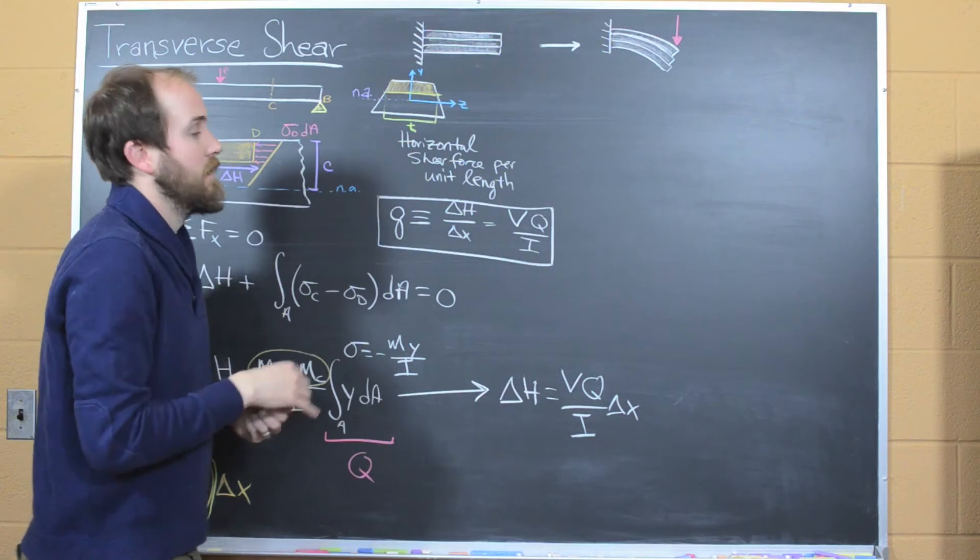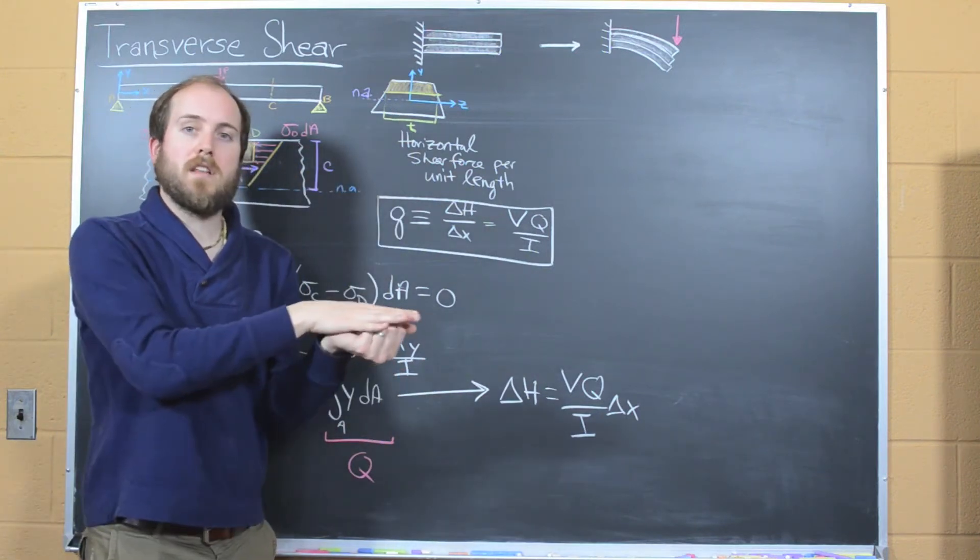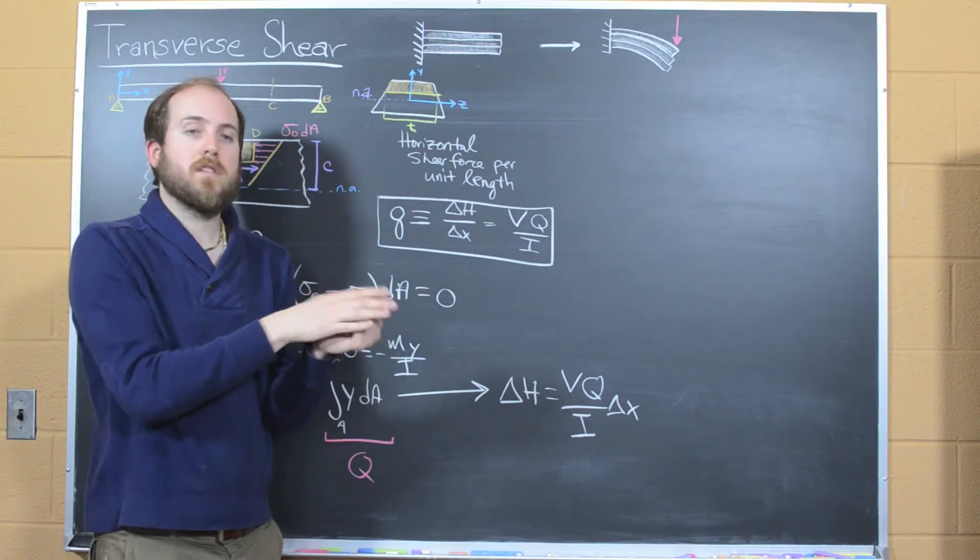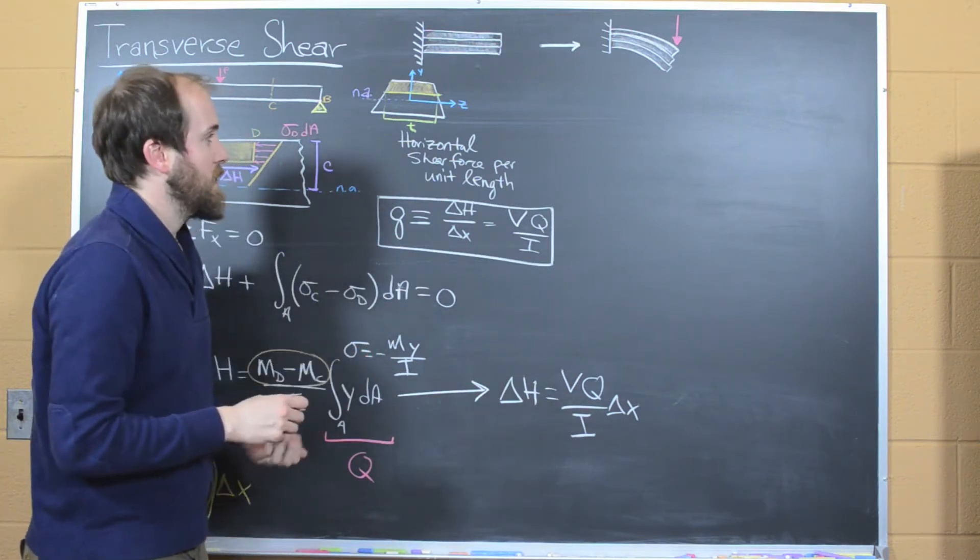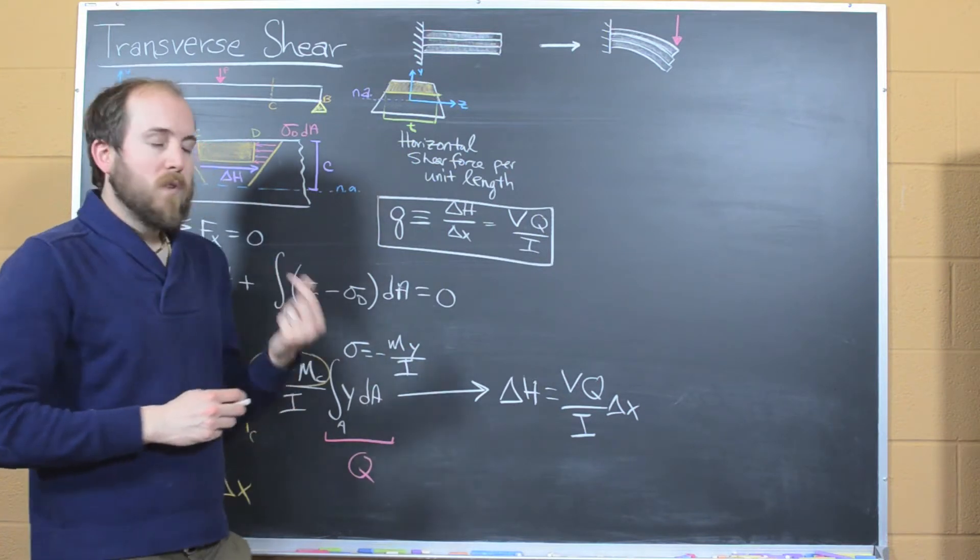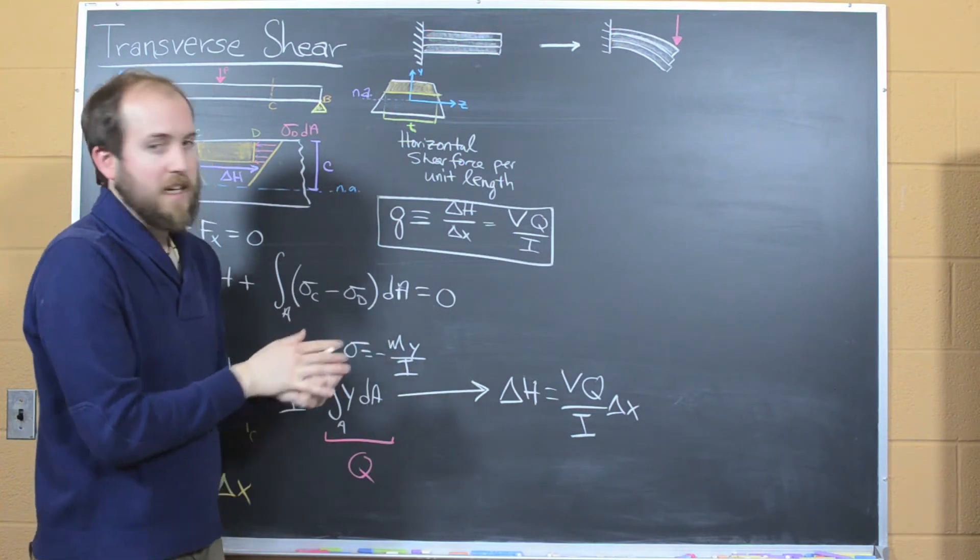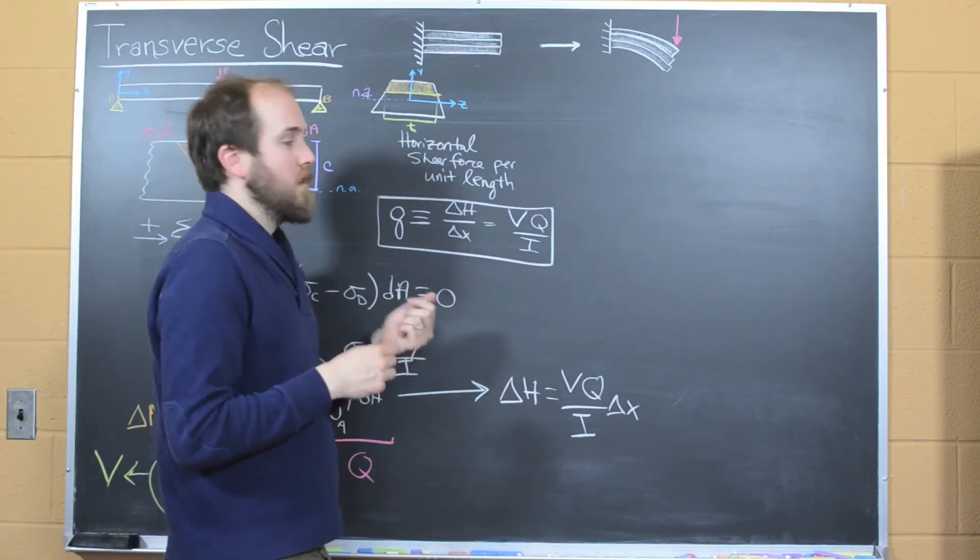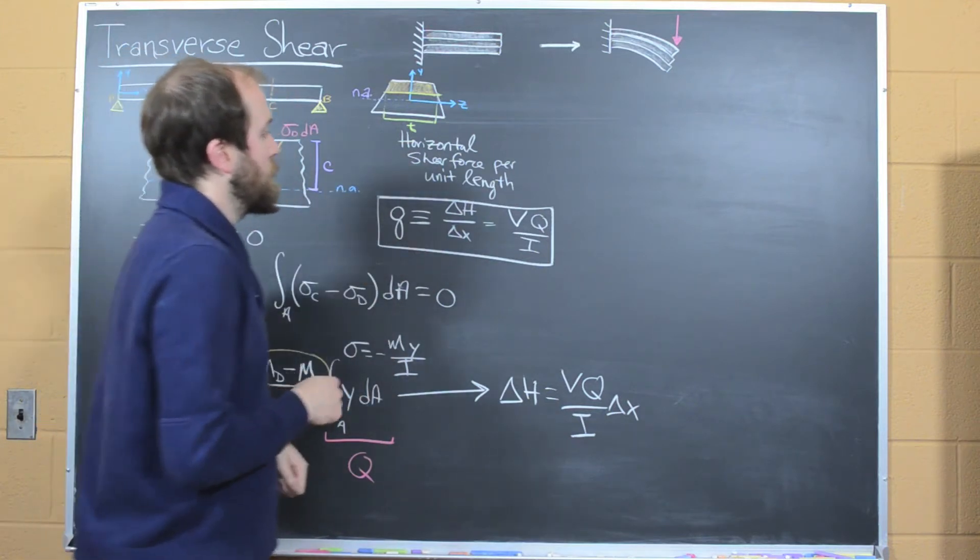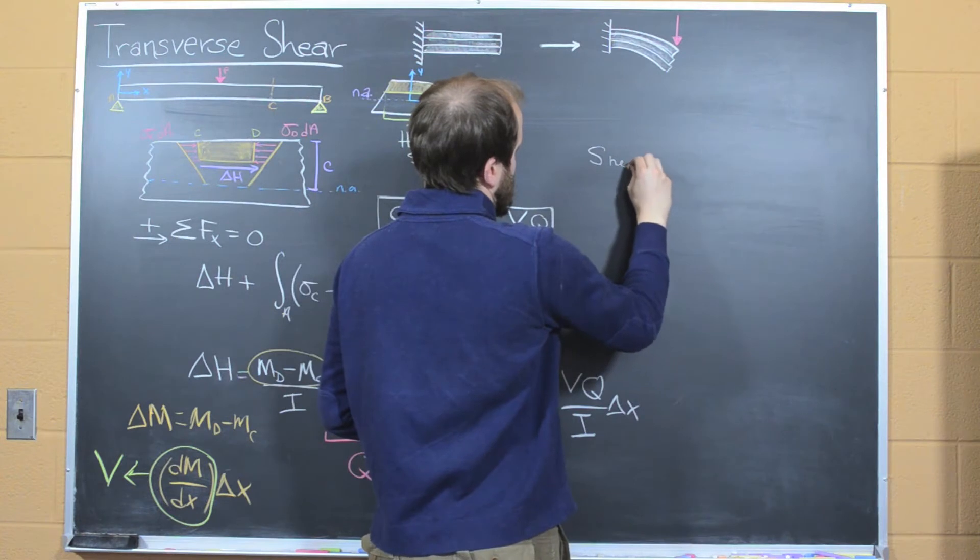t can vary a lot. Instead of being a plane, if this was a bolt, t is going to be the diameter of that bolt. If this was a glued segment, it's going to be the diameter of that glued segment. And so it's really important to take time and carefully identify the width of the area that we're interested in for calculating these problems. That allows us to take this from a horizontal shear force per unit length into a transverse shear stress.